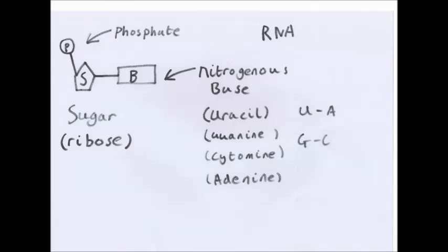RNA, very similar, almost identical except its sugar is ribose. And it's got nitrogenous bases: uracil, guanine, cytosine, and adenine. U instead of T, and U pairs with A.